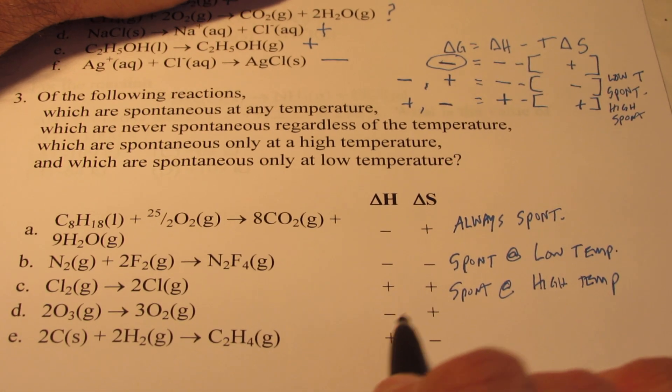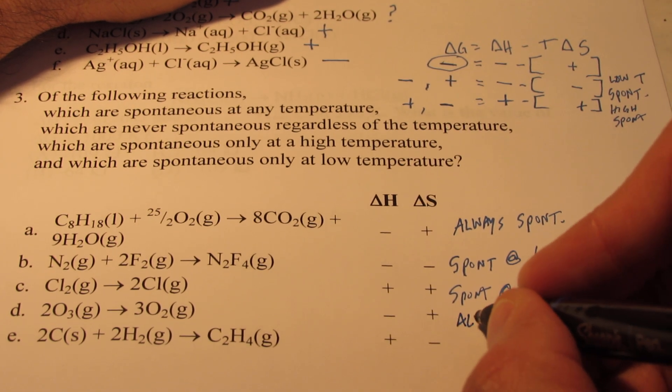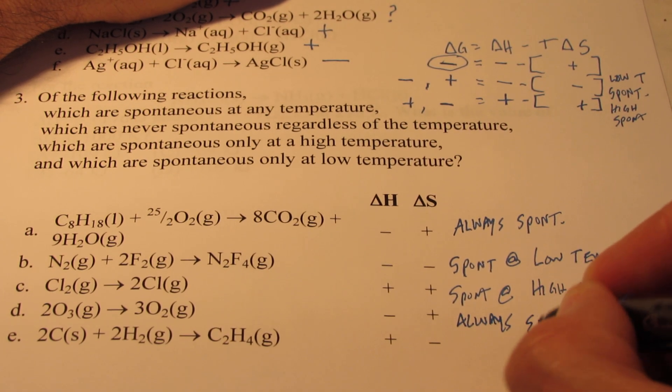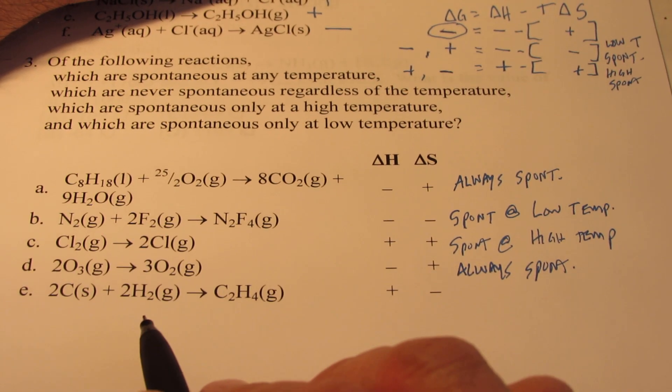Letter D we've already done. Negative, positive. Negative, positive. I'm not going to explain that again. That one is always spontaneous. And then, finally, letter E.